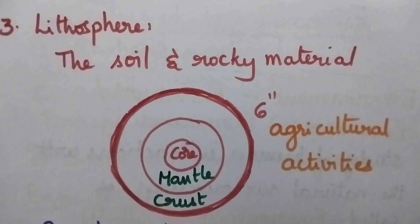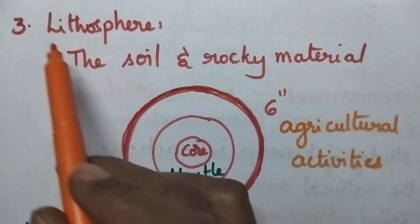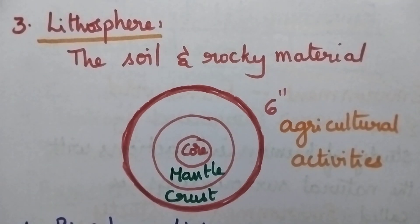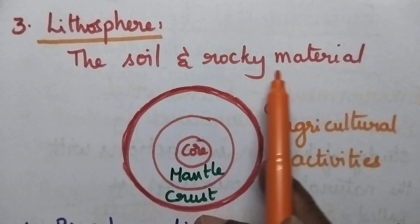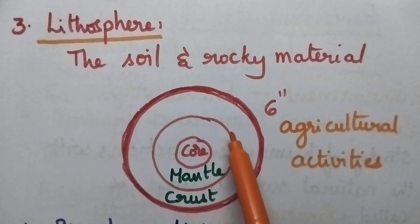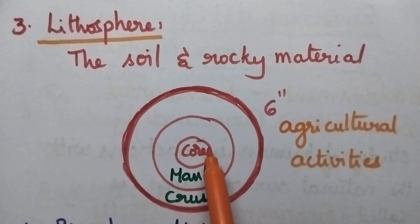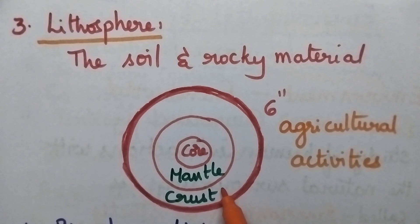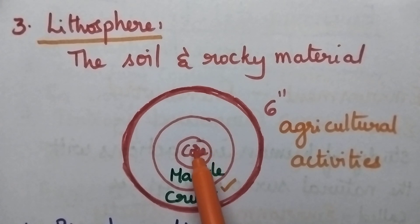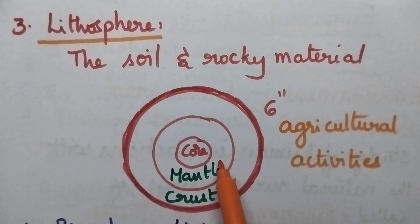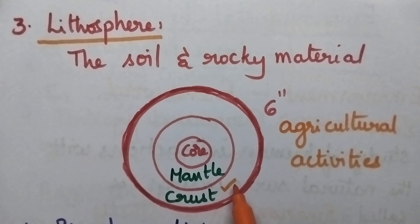The third segment of the environment is called lithosphere — it is the soil and rocky material. The earth can be classified into three segments: the inner one is called the core, that is covered with mantle, and the outer surface is called the crust. The core is the gaseous component where 5000 degrees centigrade is maintained. The mantle is the liquid component, and the top layer — the crust — is the solid component.